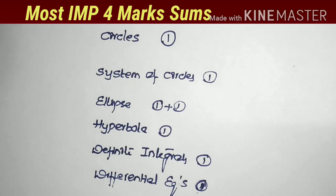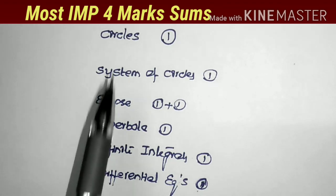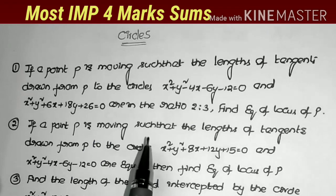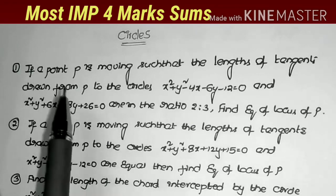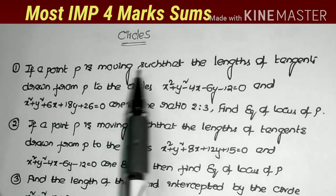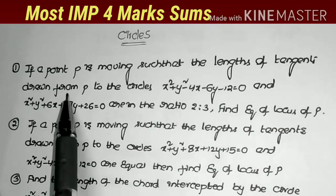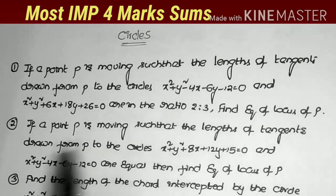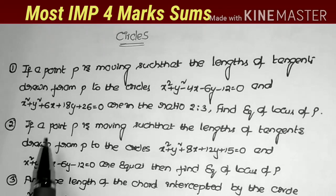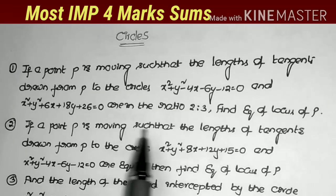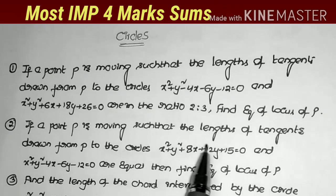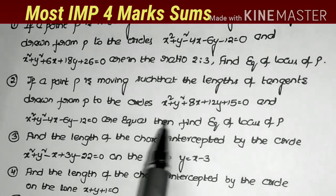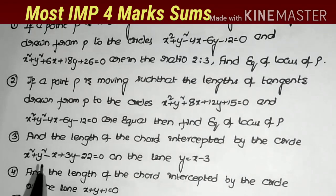Now let us see the important sums from the circles chapter. First problem: if a point P is moving such that the lengths of the tangents drawn from P to the circles are in the ratio 2:3, then find the equation of the locus of P. Second problem, same model: if the lengths of tangents drawn from P to the circles are equal, find the equation of the locus of P. Third problem: find the length of the chord.